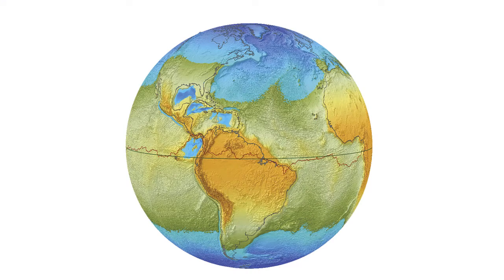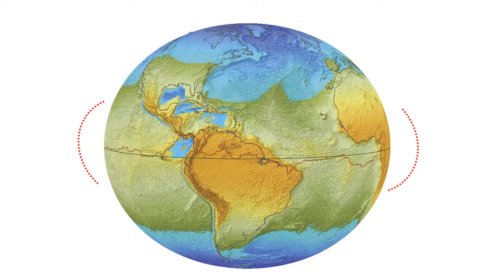We commonly think that the Earth is a perfect sphere, but it is not quite spherical. It is slightly bulged at the equator.